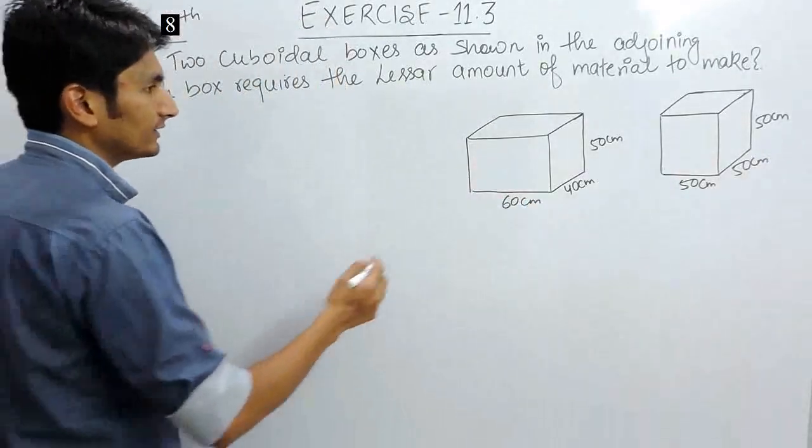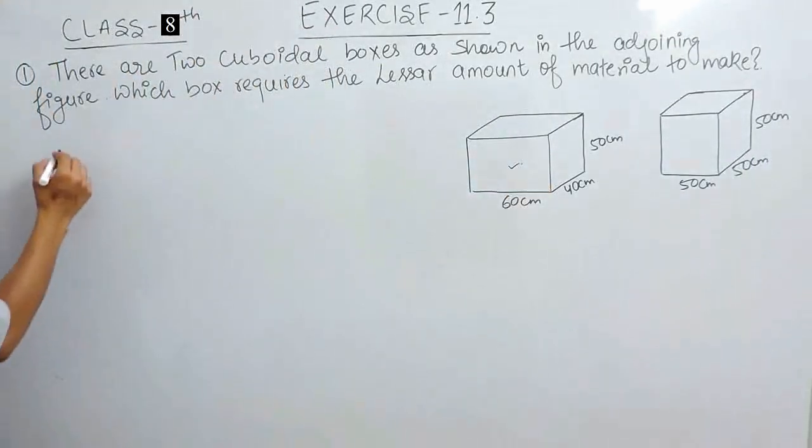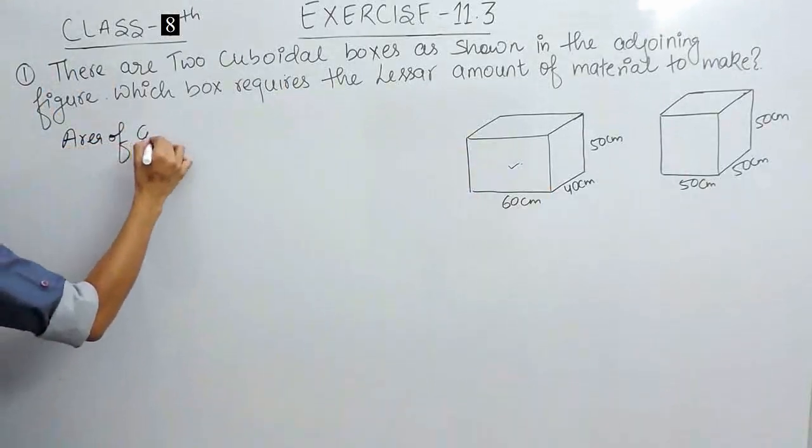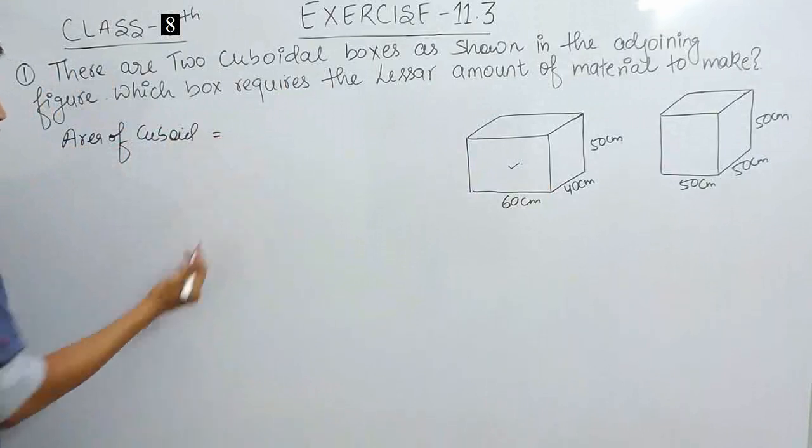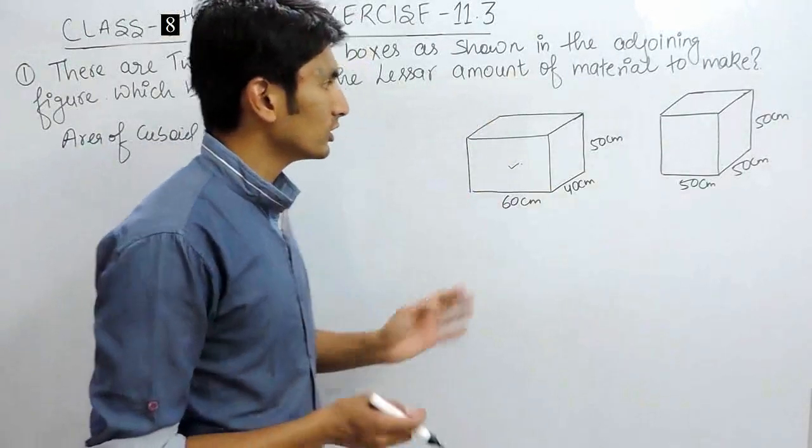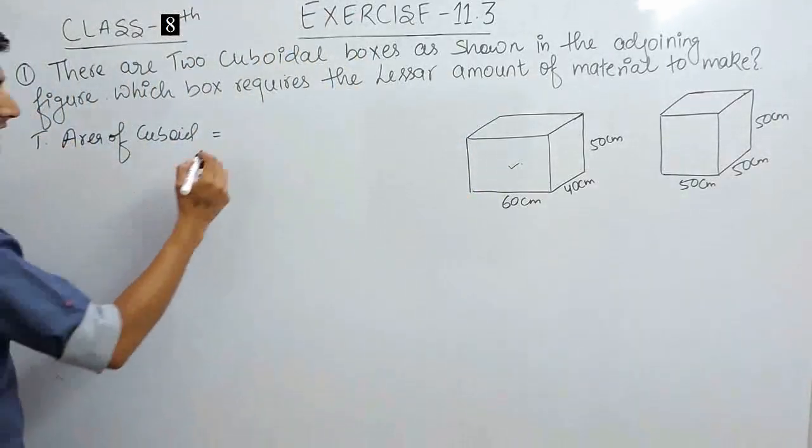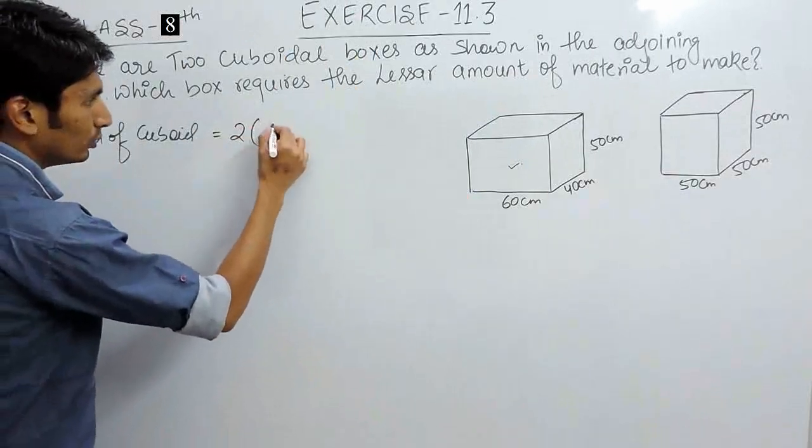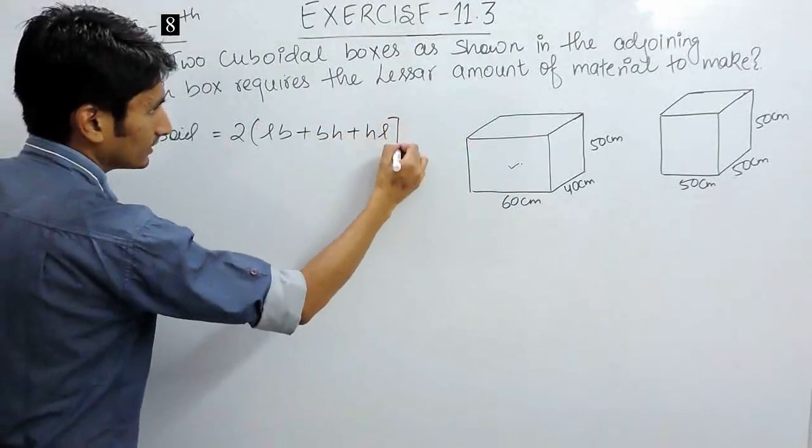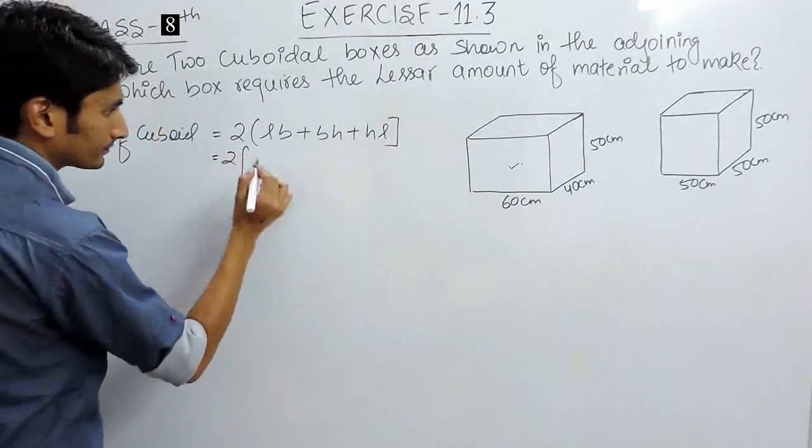And the minimum area would require the minimum material to make. So let's first of all find the area of cuboid. And we know that the area of cuboid - because you are making a box which is closed - you need to find the total area of the cuboid, which says twice into length breadth plus breadth height plus height length. So let's substitute the value. Here,